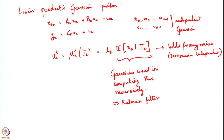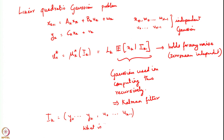The main thing we will discuss in today's class is: given this particular conditional expectation, what is its form as a function of I_k? Remember, I_k here is all the observations up until time k and all the actions up until the previous time instant.